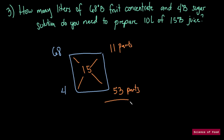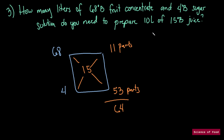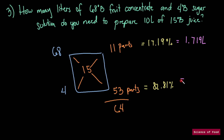We can get the percentage by adding 11 and 53, which gives us 64. So 11 divided by 64 times 100 gives us 17.19 percent, and we would have 82.81 percent for the other. Now we multiply by the total amount — 10 liters. That gives us 1.719 liters of the fruit concentrate and 8.281 liters of the sugar solution.